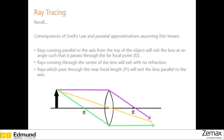With these assumptions, we can use a few rules to help us trace rays through our system. Rule one: rays traveling parallel to the axis that are refracted by the lens will be refracted such that they travel through the focal point of the lens. This is illustrated by the purple ray in the diagram.